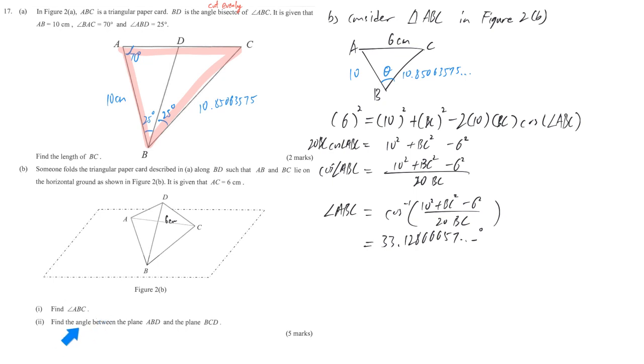And now come to the most difficult part. We are going to find the angle between the plane ABD and also BCD. It's difficult to imagine. But basically the key point is when we talk about the angle between two planes, we have to find some line to represent each plane. And to represent it, you have to consider the intercept line.